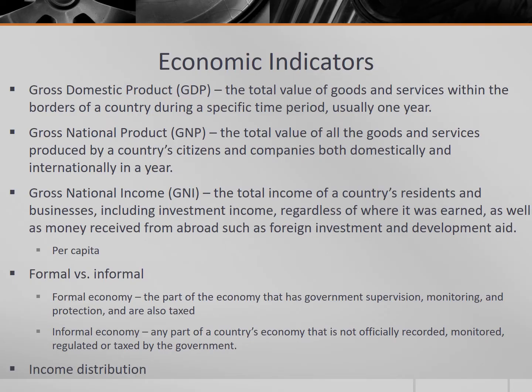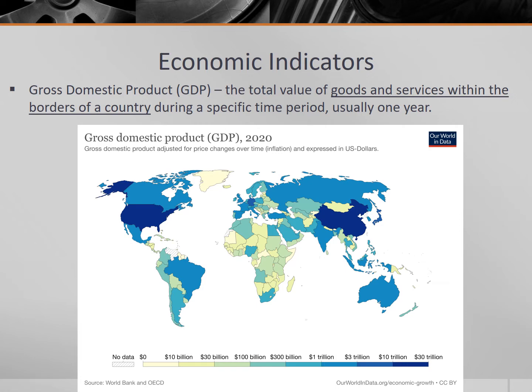Let's continue by examining some other economic measures of development — generally good quantitative metrics to help us understand the quality of life in different places. We'll start with perhaps the most well-known economic indicator of development: gross domestic product, or GDP. This is the total value of goods and services within the borders of a country during a specific time period, usually one year. Generally, as a country's development improves, their GDP increases. Tertiary sector services have more economic value than primary sector raw materials.